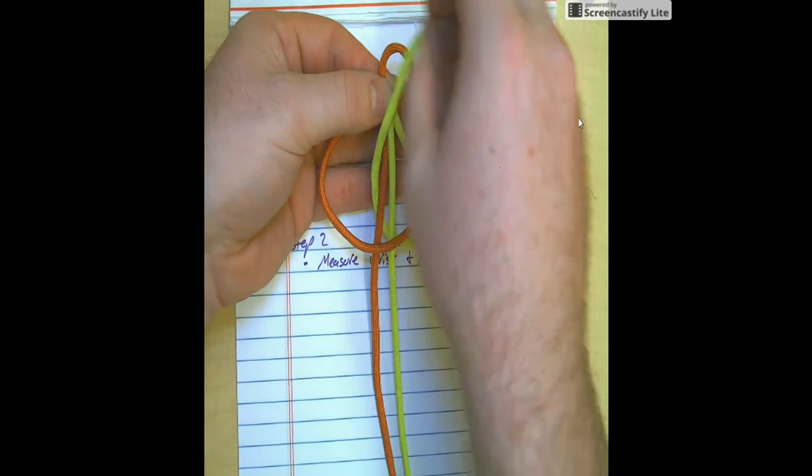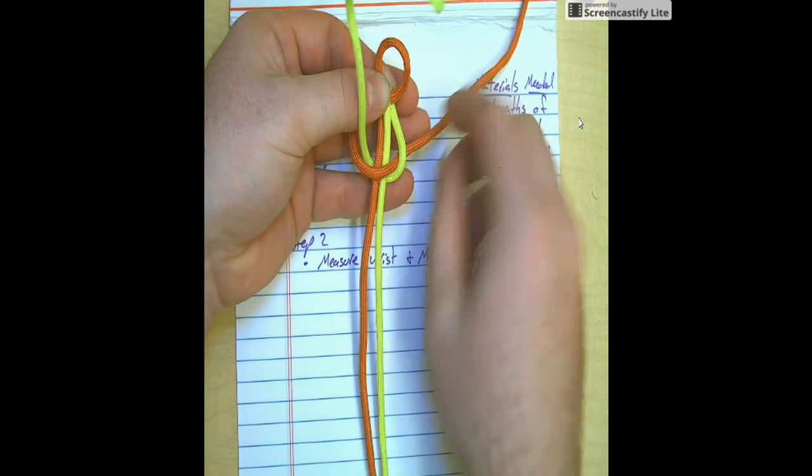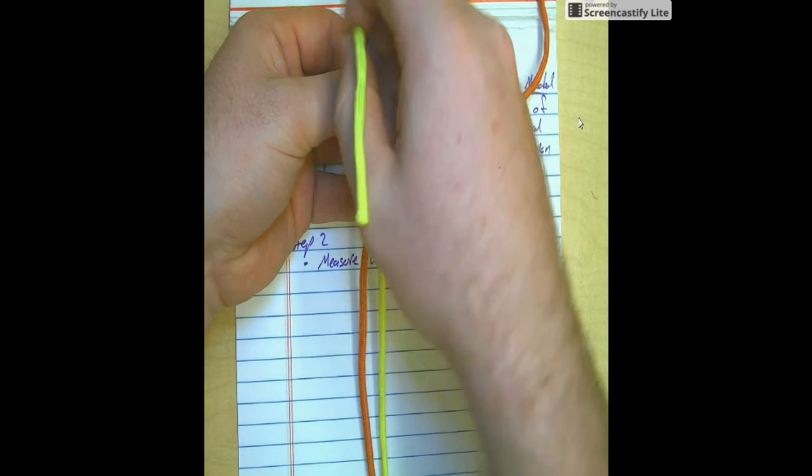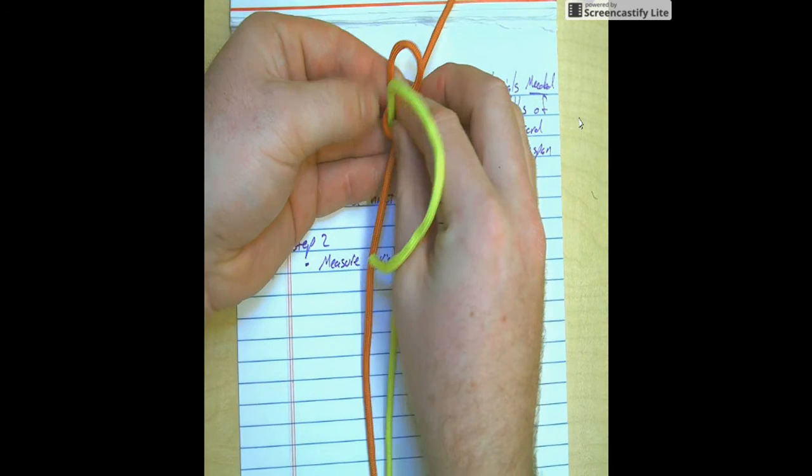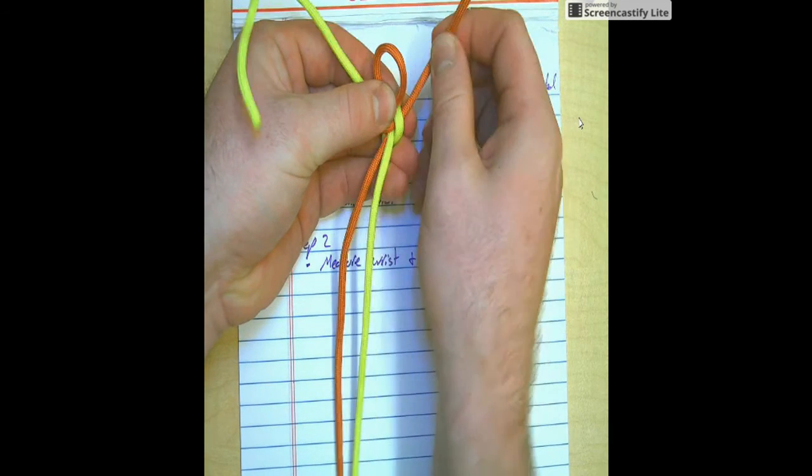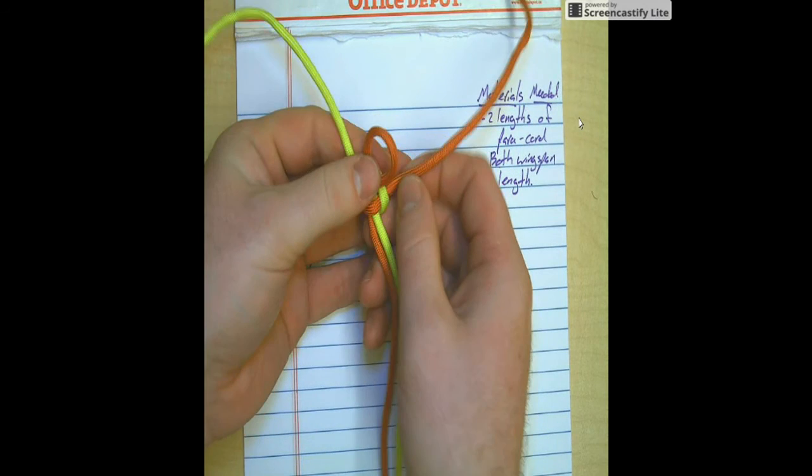And then you're going to come back up through the loop you've made. It's kind of tricky, so you're going to have to kind of go slow with this. You're going to continue to pull up. Once you reach this, it's very tricky, or it just takes a little bit.